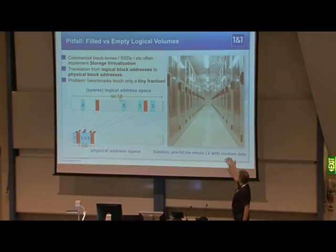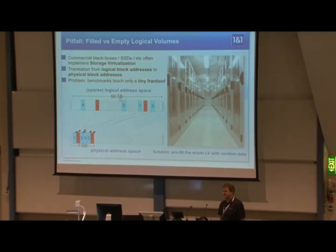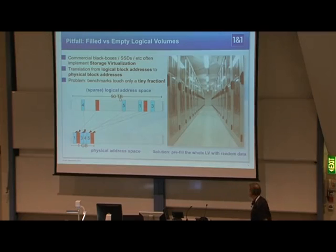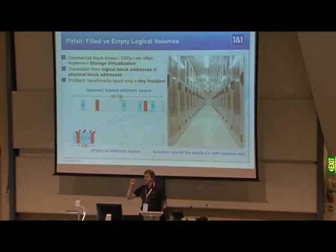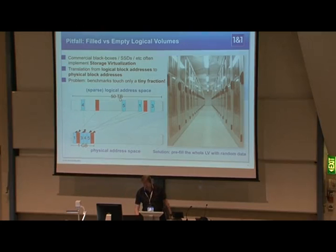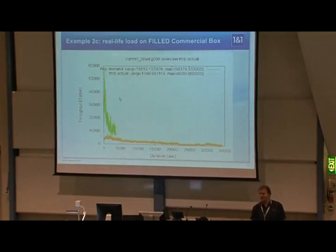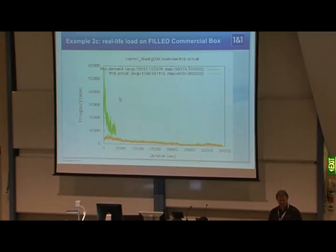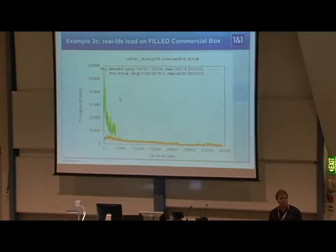There is one countermeasure: just fill your logical volumes with random data. Don't fill it with zeroed blocks, because some commercial black boxes might detect this and not allocate anything — it depends on the vendor and you can't see it. So use random data and fill the volumes. The first slide showed the commercial system without filling it. Now I'll show you the result with filling. Usually your customers will fill your logical volumes with data. Which one is the real performance — this one or the former one? In reality it's something in between, because volumes aren't completely filled to 100%, but it will come much closer to the filled result.